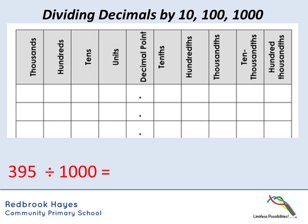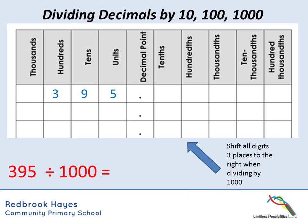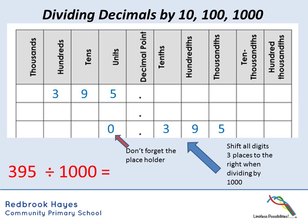The final example is 395 ÷ 1000. We pop 395 into the place value chart and shift three places to the right because 1000 has three zeros. Moving the five, nine, and three, we find there's nothing left in the units column — but we need something there, so we use a placeholder zero. Our answer is 0.395.